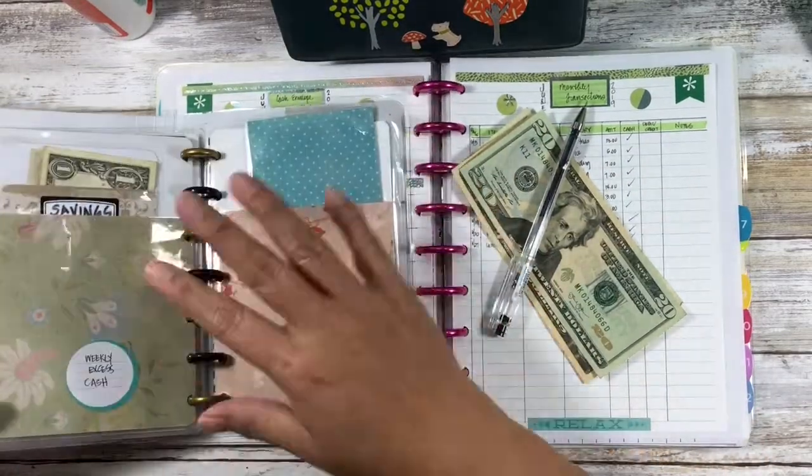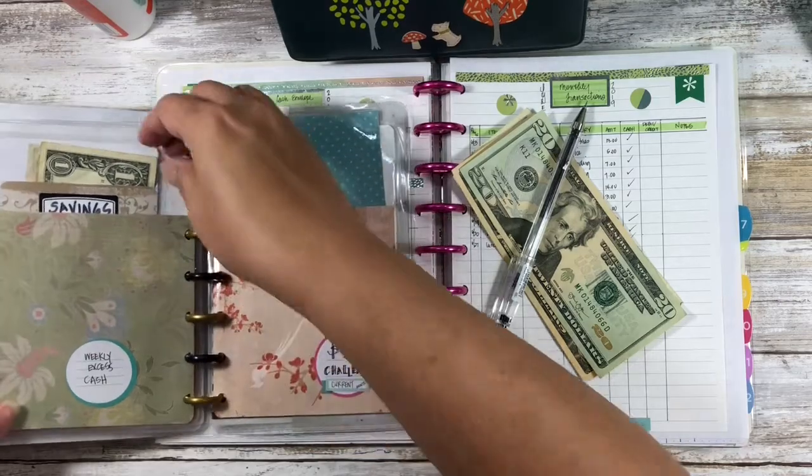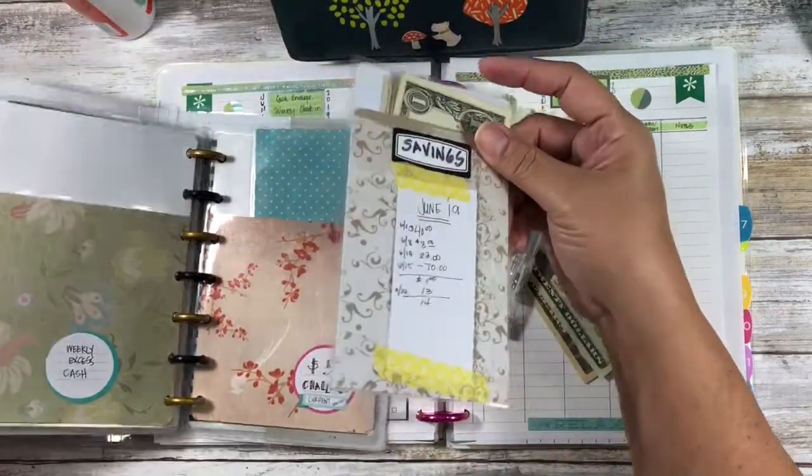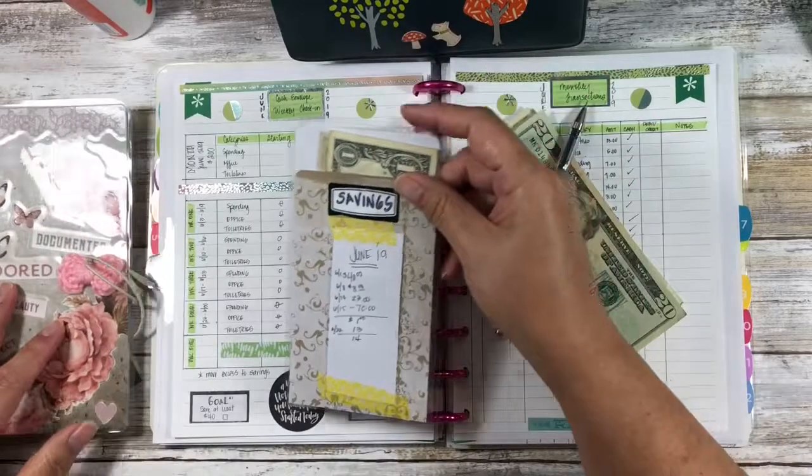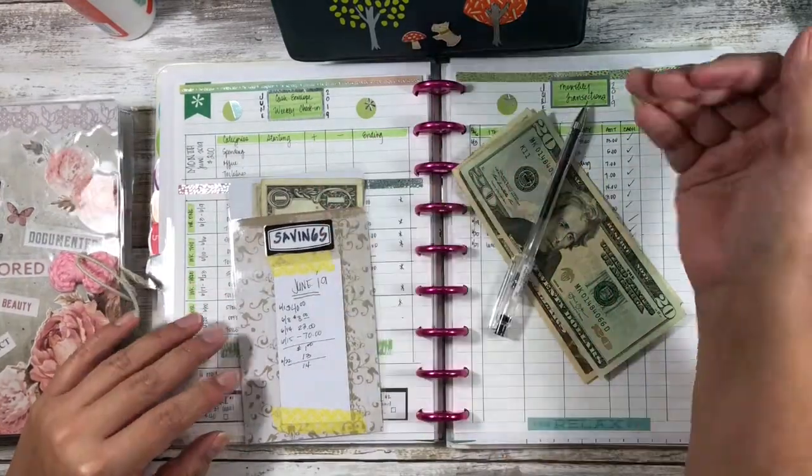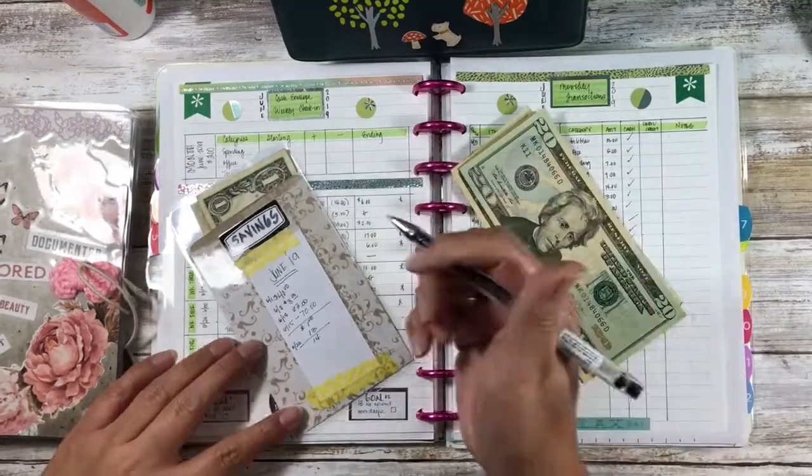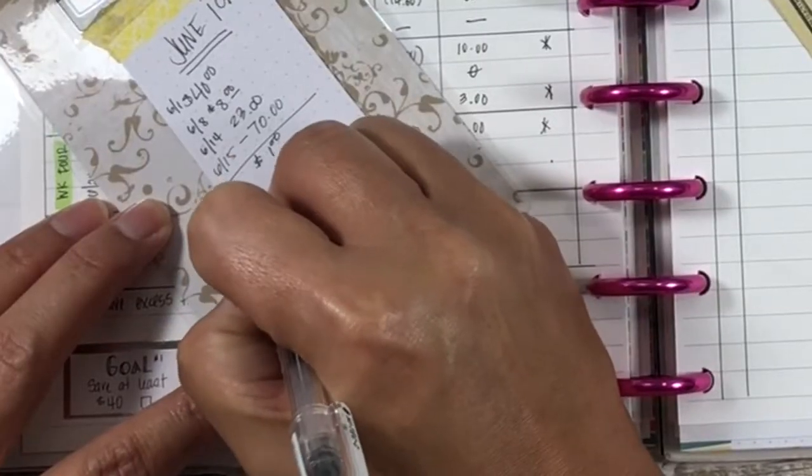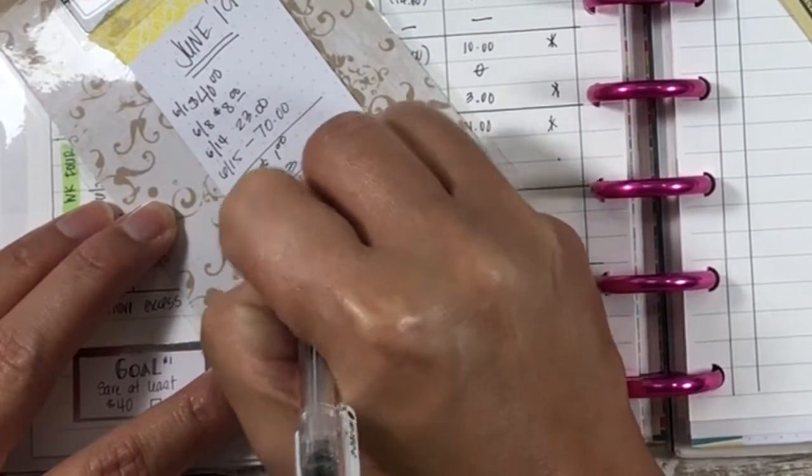This is the little pocket divider thing that I made just because the way that I do cash envelopes, they will be funded for the next month with the previous month. So on the 29th, which is today, we are adding...